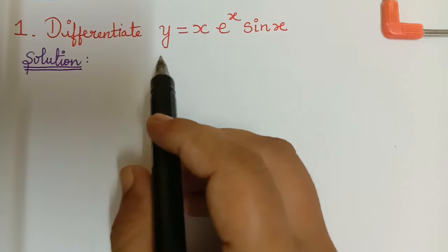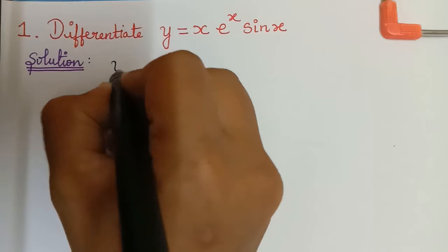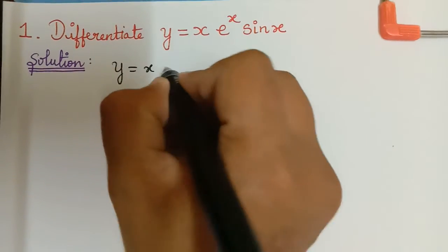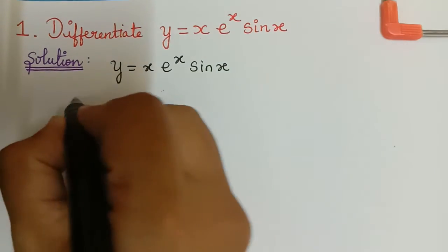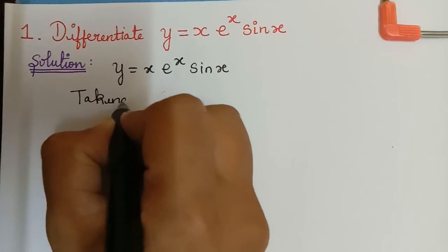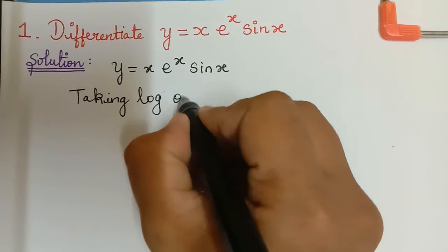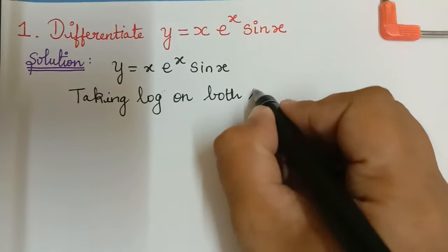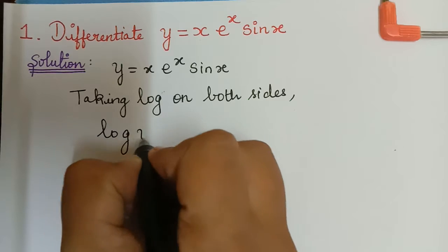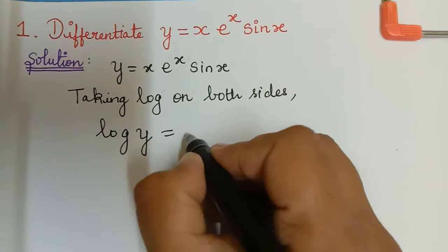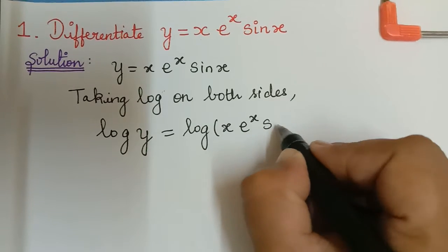The first step is we have to take logarithm on both the sides. So y is equal to x e power x sin x is given in the question. Now taking logarithm on both the sides, we get that log y is equal to log of x e power x sin x.